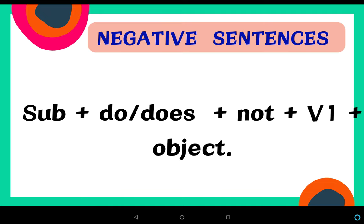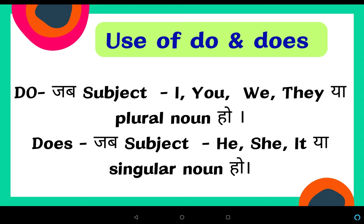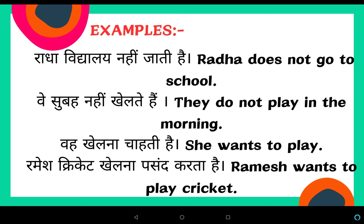We use 'do' when the subject is I, you, we, they, or a plural noun. We use 'does' when the subject is he, she, it, or a singular noun. Now let's look at some examples.